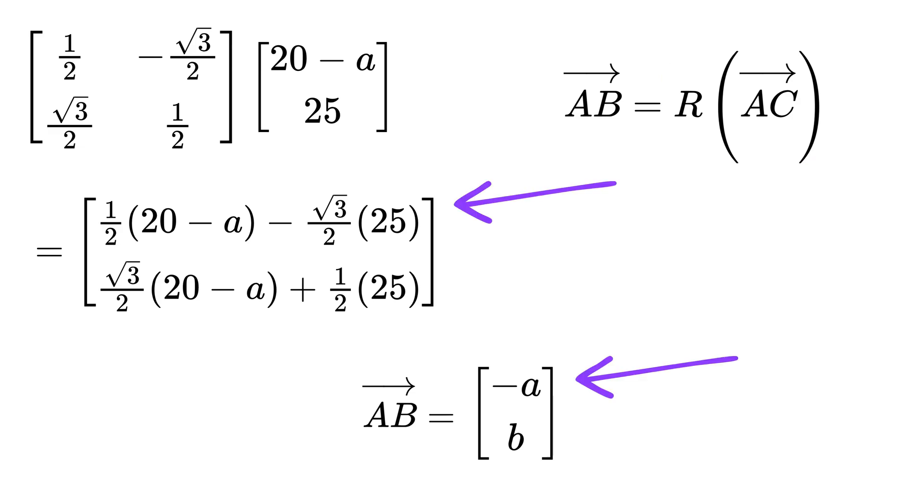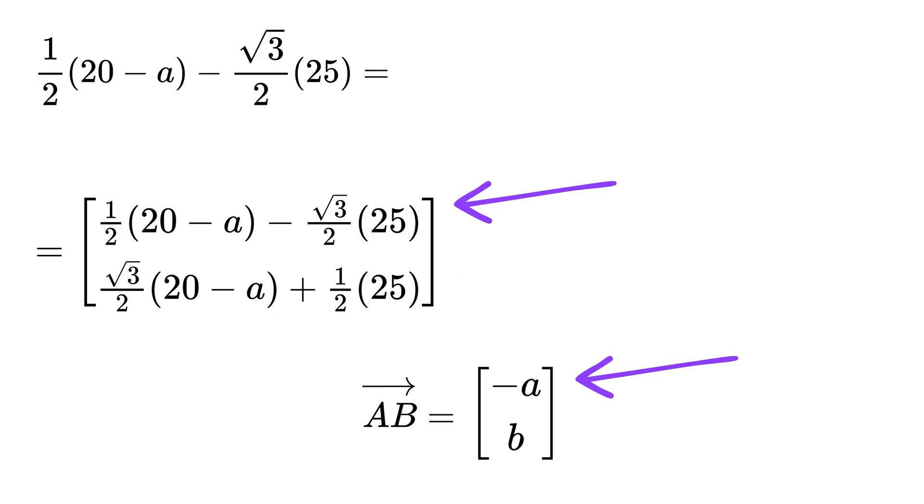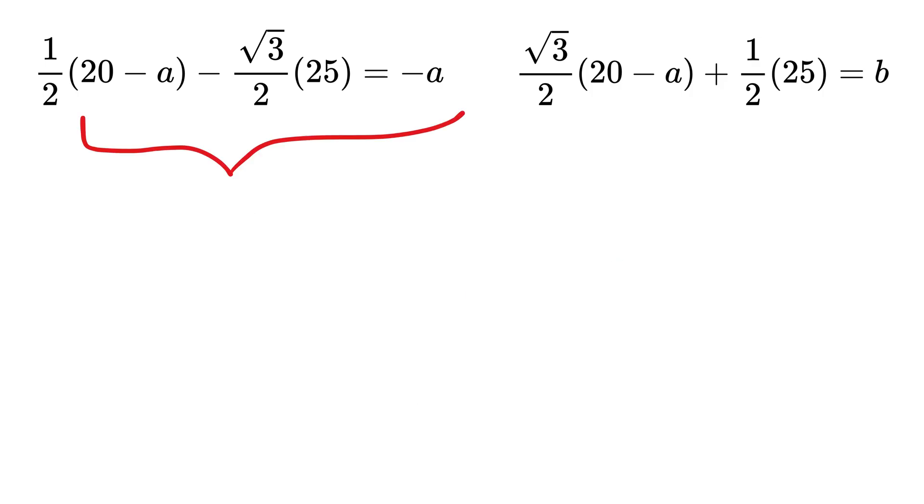So now, we just have to equate first row of both these vectors and the second row of both these vectors to each other. We get this equals -a and this equals b. Oh wow! We now have an equation in a, which is just a linear equation which can be solved very easily.